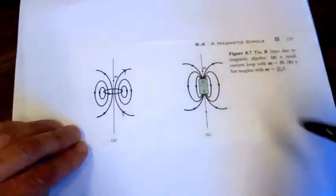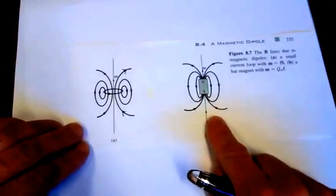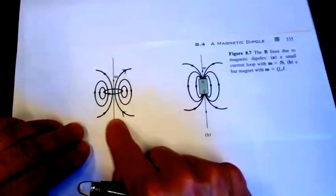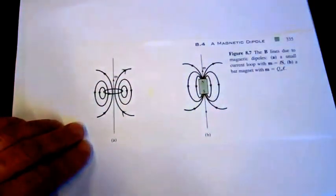And here's the magnetic fields associated with a bar magnet, and you can see the similarity between the field produced by the current carrying coil and that of a bar magnet.